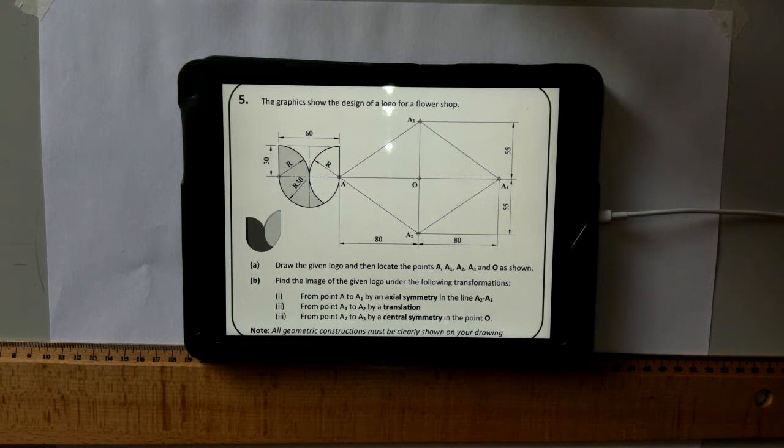Hi lads, in this video I'm going to go through the 2017 transformation geometry question from ordinary level. The question tells us the graphics show the design of a logo for a flower shop. Draw the given logo and then locate the points A, A1, A2, A3 and O shown.